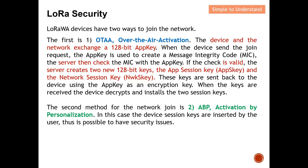Now I'll explain the difference between a public key and a private key. Continuing the name card analogy: the name card that the end device gives to the network is called a private key, because that 128-bit password is only known to the end device and the network — no one else is supposed to know it. The key that the network gives back to the device is the public key, because when the device wants to join the network it shows that key openly, where everyone can see it.